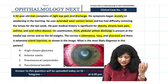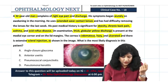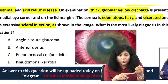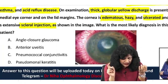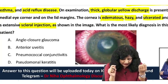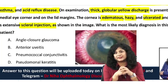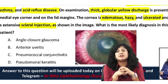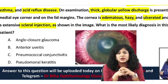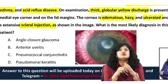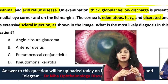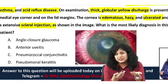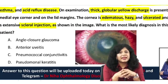What is the most likely diagnosis? The options are: angle closure glaucoma, anterior uveitis, pneumococcal conjunctivitis, or pseudomonas keratitis. You are fortunate that acanthamoeba keratitis is not in the options, but you should know how to rule it out even if it were given, since contact lens users have a high propensity for acanthamoeba keratitis.